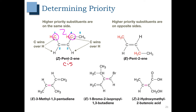Let's look at the E example. The left carbon has a carbon and a hydrogen attached — carbon wins. On the right carbon, we have a carbon and a hydrogen attached — the carbon wins again. In this case those groups are on opposite sides, so we get E. Notice that this can also be called trans. When entering these problems in Sapling, you can choose to use either the cis-trans system or the EZ system for these examples.